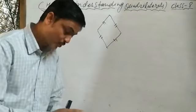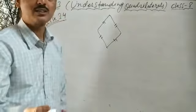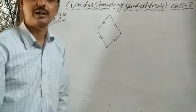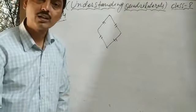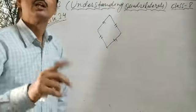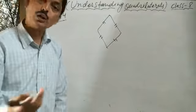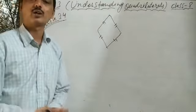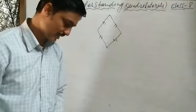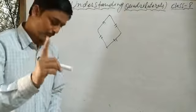Explain how a square is a parallelogram. Because in a square, opposite sides are parallel and equal, diagonals bisect each other, and opposite angles are equal — all the properties of a parallelogram exist in a square. That is why a square is a parallelogram.